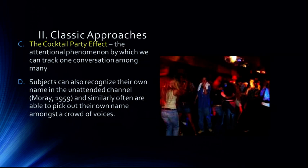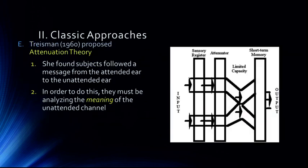That leads us to the research of Anne Treisman. She was quite a brilliant scientist who actually just passed away in 2018. She was a pioneer in her field — the only woman in her psychology department at Oxford, and certainly the only woman doing much cognitive psychology research back in the 1950s and 60s. It's really remarkable that she was able to accomplish so much. What Treisman found is that subjects would follow a message from the attended ear to the unattended ear — they would start a sentence in the attended ear and then finish it in the unattended ear, and participants would follow that message to the other ear.